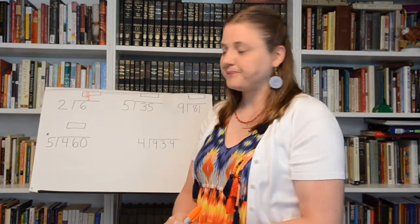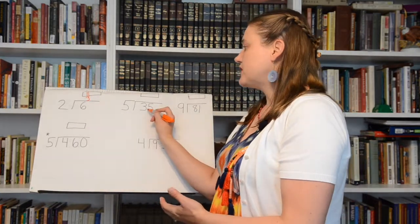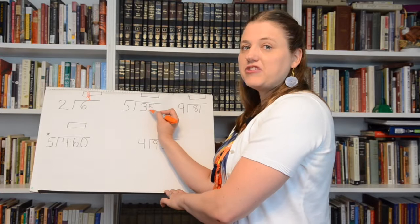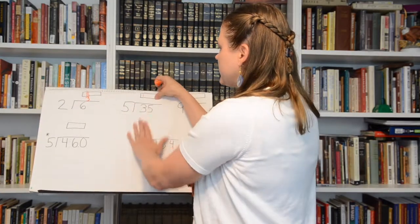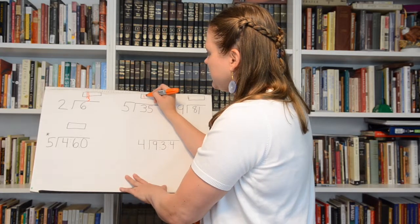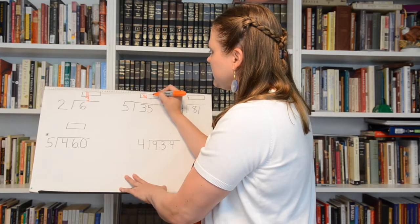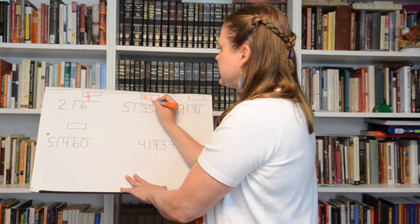Then they'll do it again. They'll say how many times do I count by five to get to 35? Five, ten, fifteen, twenty, twenty-five, thirty, thirty-five. I did it seven times.